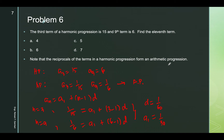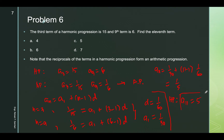We are asked for the 11th term. A sub 11 equals 1 over 30 plus 10 times 1 over 60, which equals 1 over 5 for the arithmetic progression. For the harmonic progression, the 11th term is the reciprocal, which is 5. So the answer for number 6 is letter C.